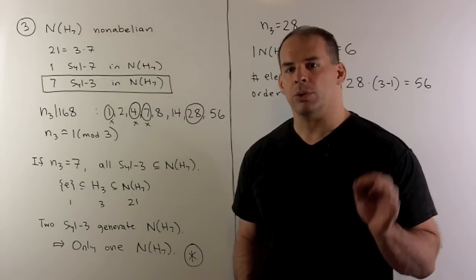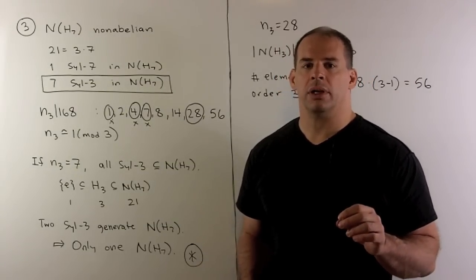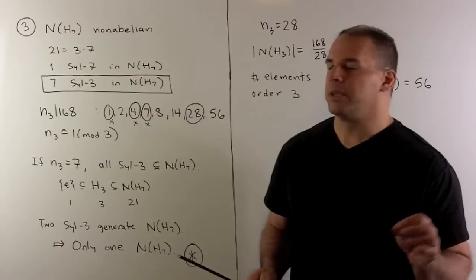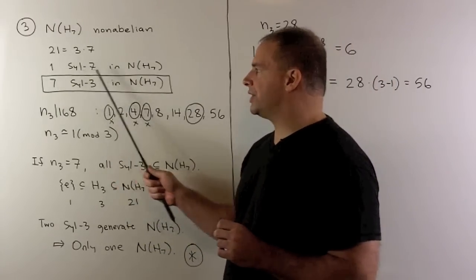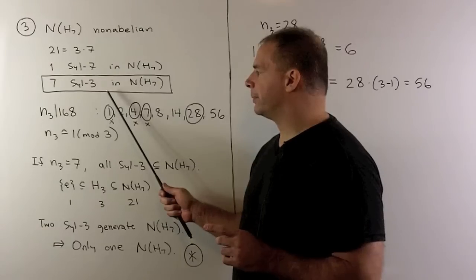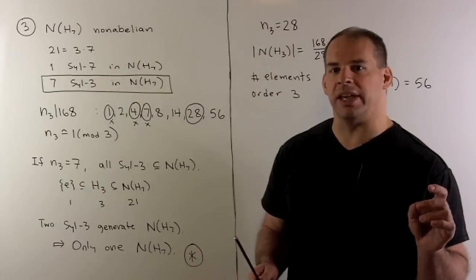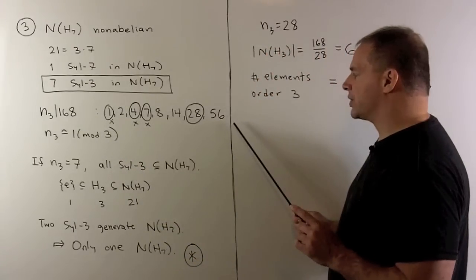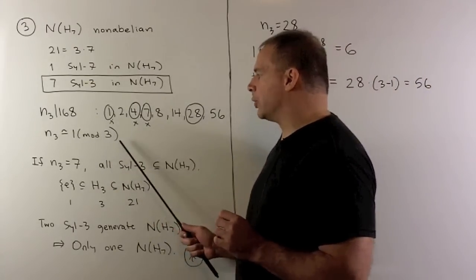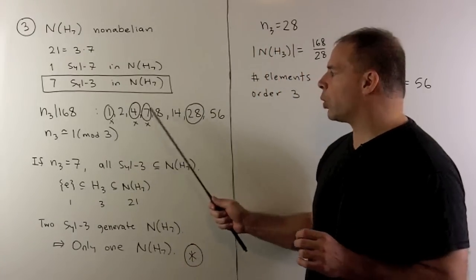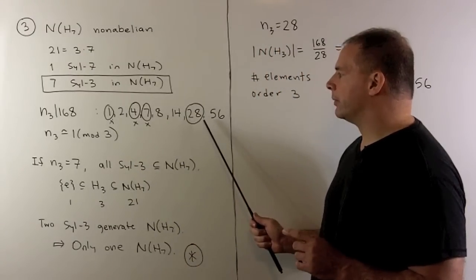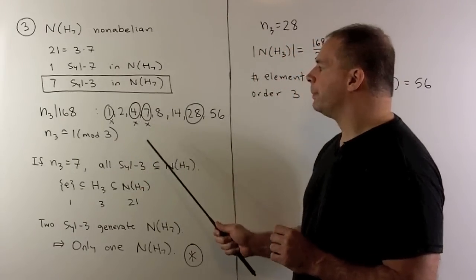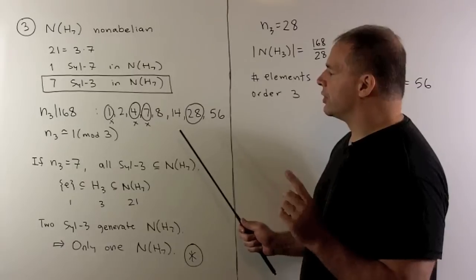Part 3. We show that n sub 3 equals 28. Now, let's fix one of these normalizers. We know it's not abelian. So, Sylow theory says it contains one Sylow 7 and seven Sylow 3s. Now, n sub 3 divides 168, but is not divisible by 3. So, we narrow it down to the following candidates. Because n sub 3 is congruent to one modulo 3, we further narrow it down to 1, 4, 7, or 28. Now, it can't be one by simplicity. Our count here says it can't be 4. So, it's 7 or 28. So, let's assume it's equal to 7.